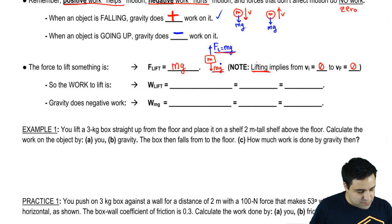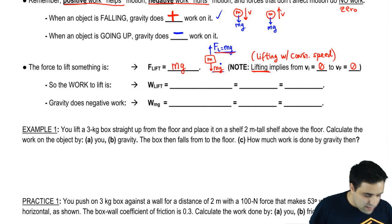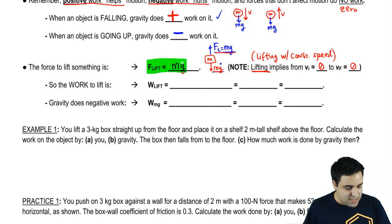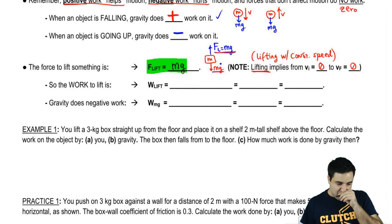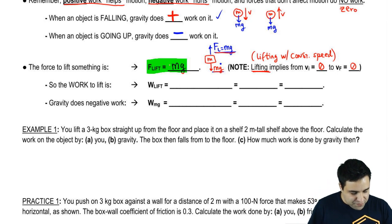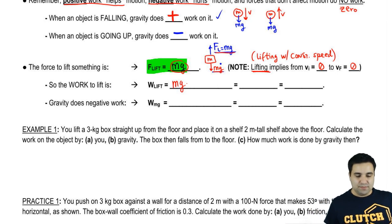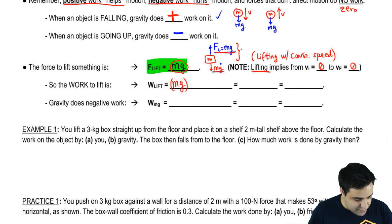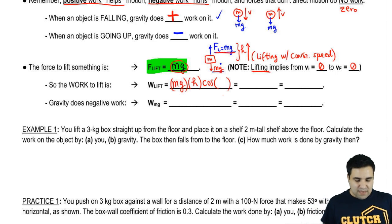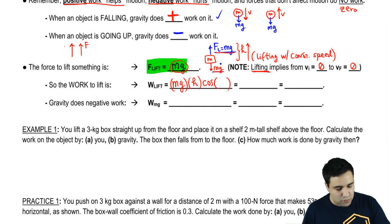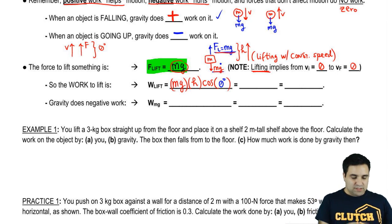So lifting, or lifting with a constant speed, means that the force you need to do that is mg. The idea is that you need to barely overcome the force of weight that's pulling you down. So what is the work to lift something? Well, if the force to lift is mg, then the work to lift is the force to lift, which is mg, times the distance. Now, let's say you're lifting something at a height of h, right? So the distance would be h, times the cosine of theta. Now, if I pull something up, and as a result, the object moves up, the angle between these two is zero. So this is going to be zero right here. And you know the cosine of zero is one.